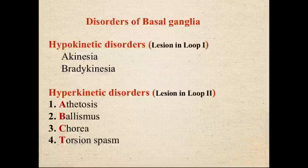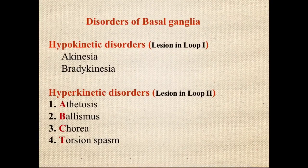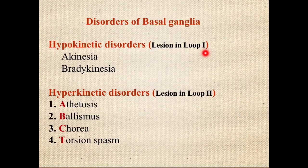This section covers disorders of the basal ganglia. The basal ganglia connections include the direct pathway and indirect pathway. Via the direct pathway, it stimulates movement patterns; via the indirect pathway, it inhibits movement. Any abnormality within the direct pathway will cause reduced movement, as the direct pathway was stimulating movement. A lesion within the direct pathway is depicted as loop one and will produce hypokinetic disorder.